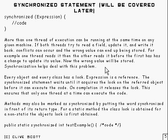If one thread reads the value and then the other thread reads the value before the first has had a chance to update it and write it back, and they both try to update it and write it back, you're going to get the wrong value stored. Synchronization is one of the ways to avoid this sort of problem.